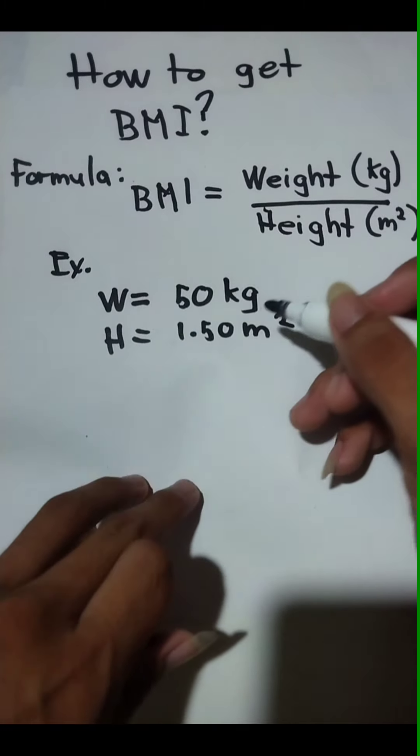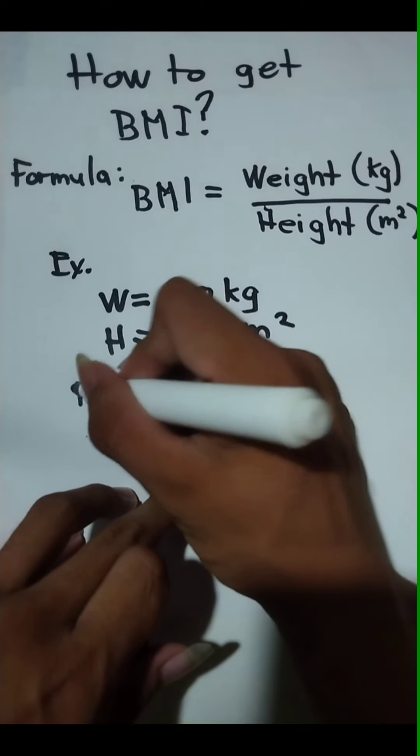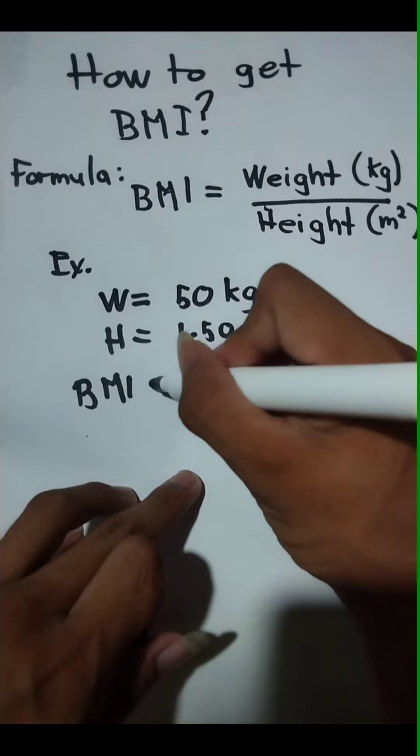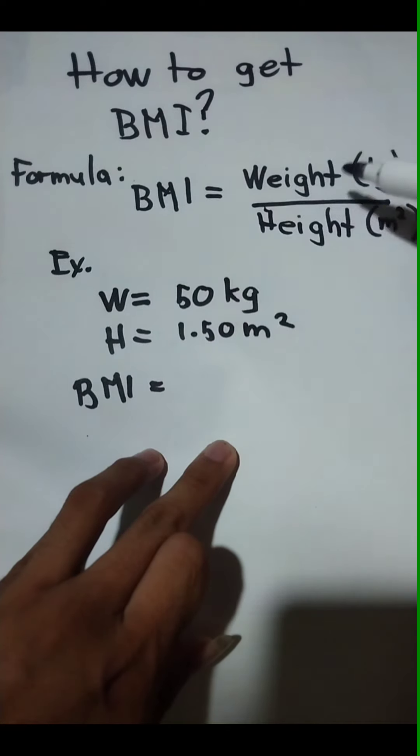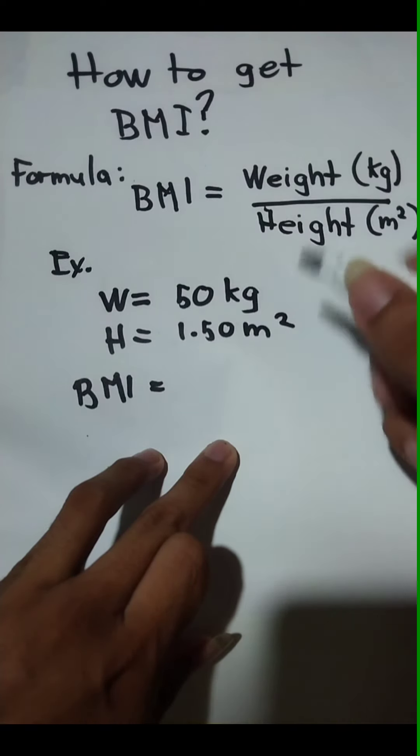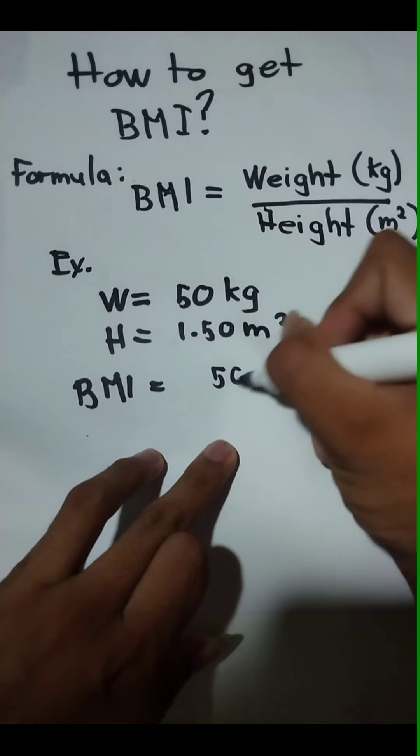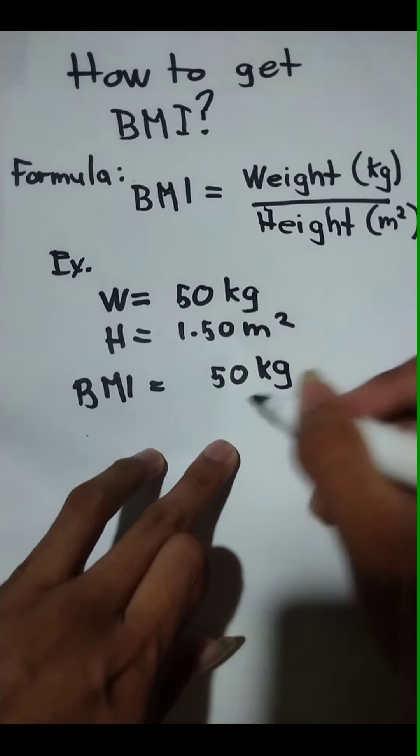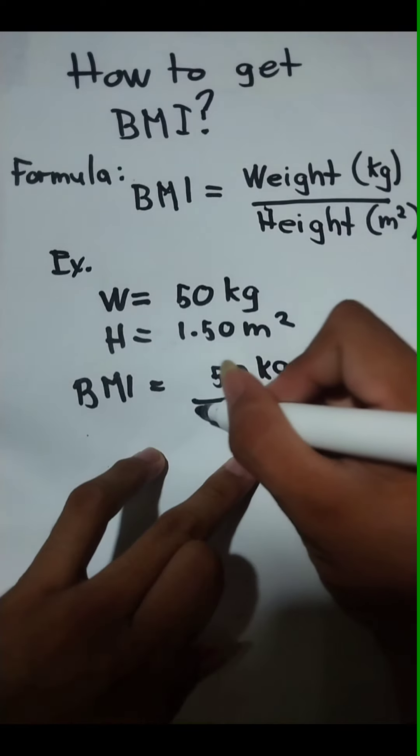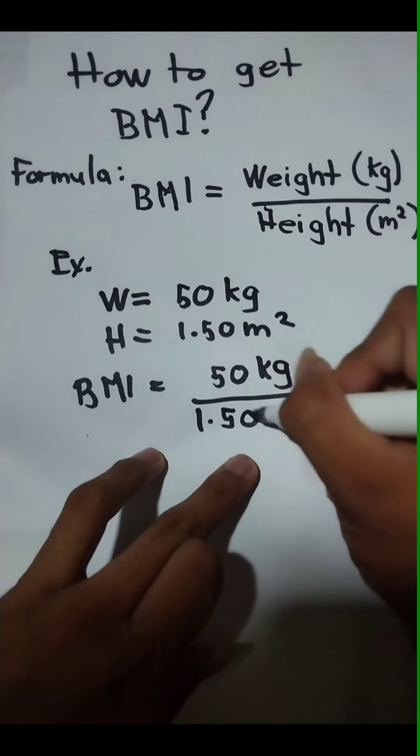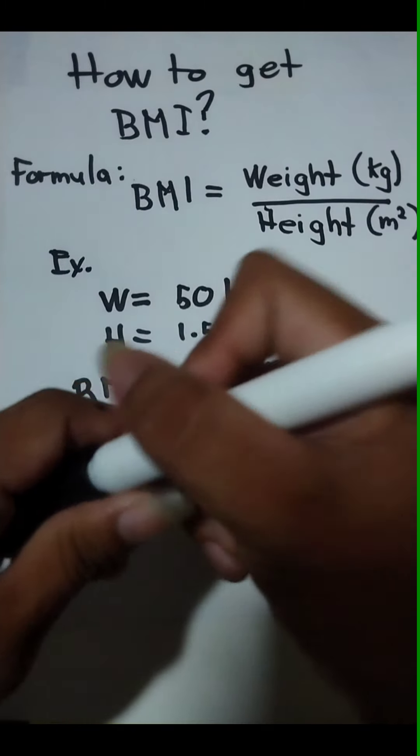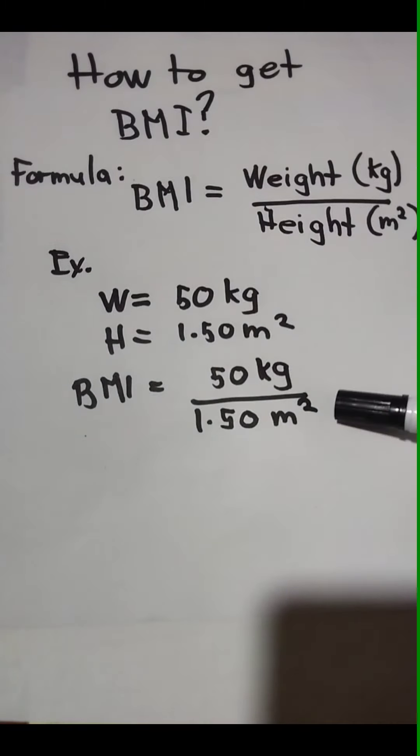The next step is to substitute the value of weight and height. So BMI equals the value of weight, which is 50 kg, over the value of height, which is 1.50 meters squared.